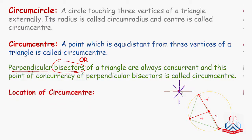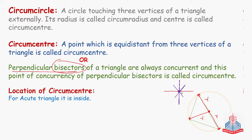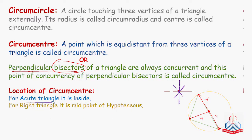Now, the location of the circumcenter. As we discussed, the in-center always lies inside the triangle. For the circumcenter, there are three different conditions. For an acute triangle — where all angles are less than 90 degrees — the circumcenter lies inside the triangle. For a right triangle, the circumcenter is at the midpoint of the hypotenuse. This is also a theorem: the midpoint of the hypotenuse is equidistant from all three vertices, so it is the circumcenter.